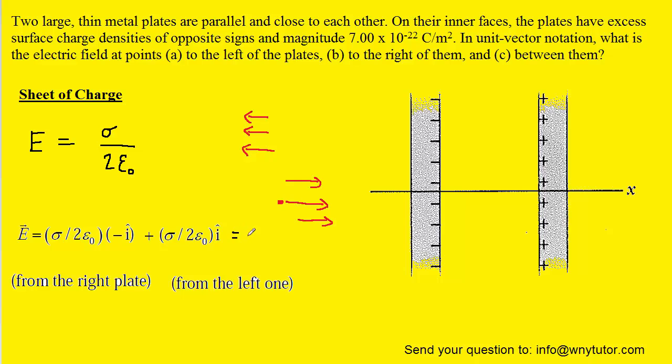Now, of course, when we add these together, we're going to get zero. So the electric field on the left side of the plate is zero newtons per coulomb.